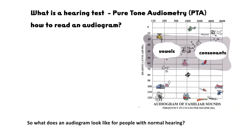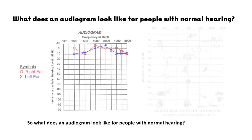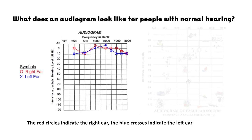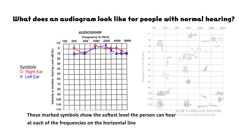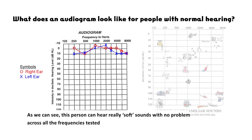So, what does an audiogram look like for people with normal hearing? The red circles indicate the right ear and the blue crosses indicate the left ear. These marked symbols show the softest level the person can hear at each of the frequencies. As we can see, this person can hear really soft sounds with no problem across all the frequencies tested.